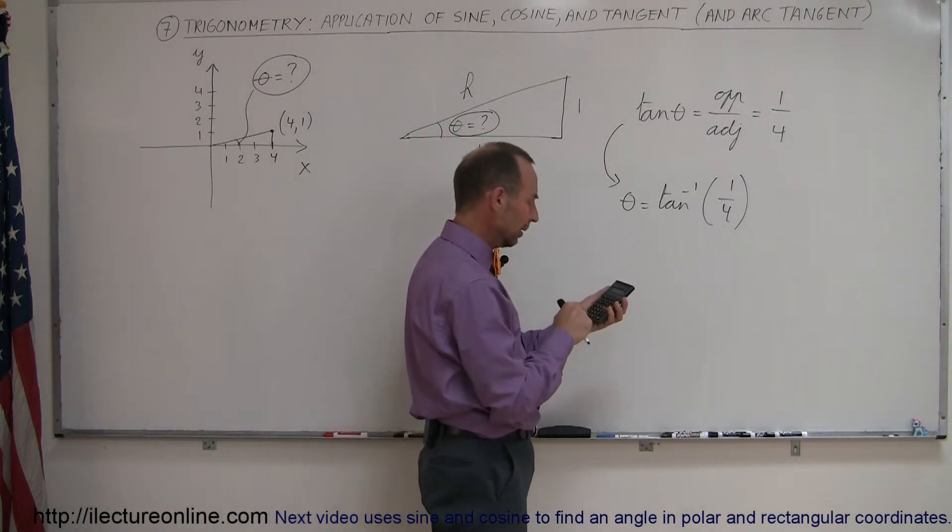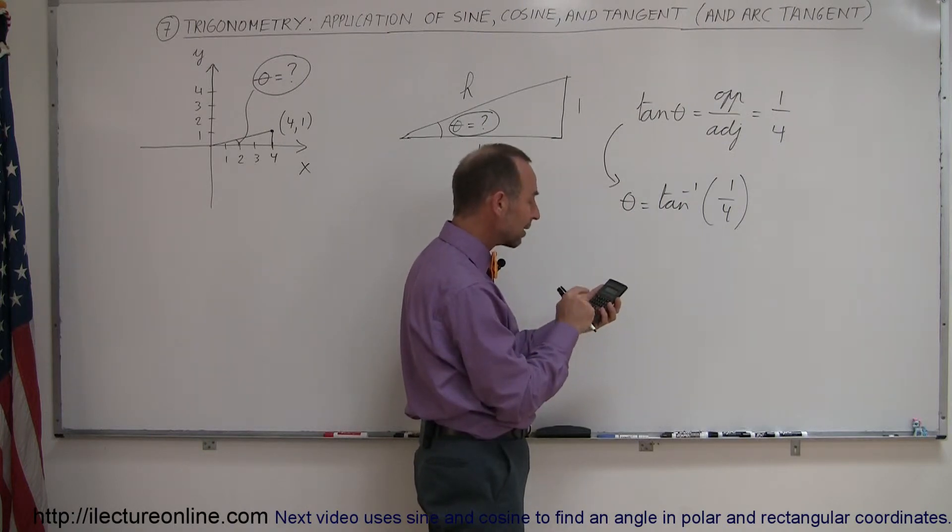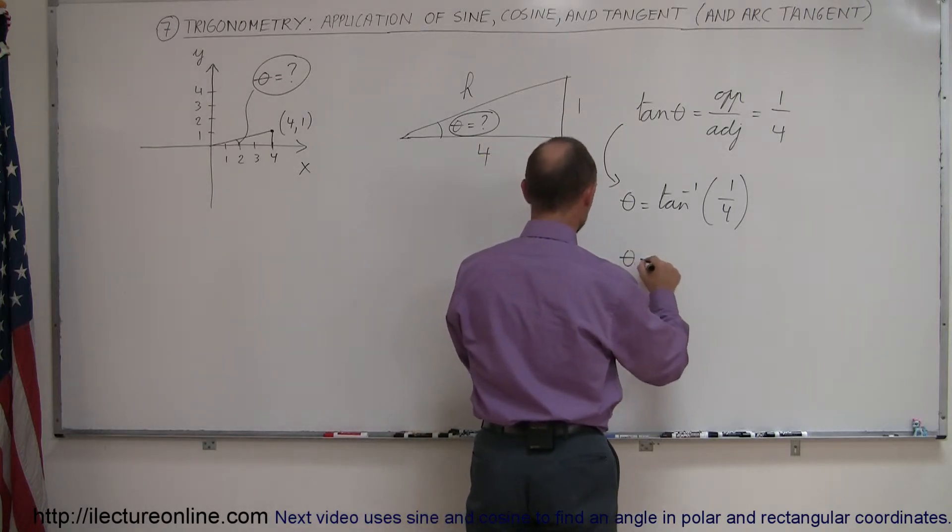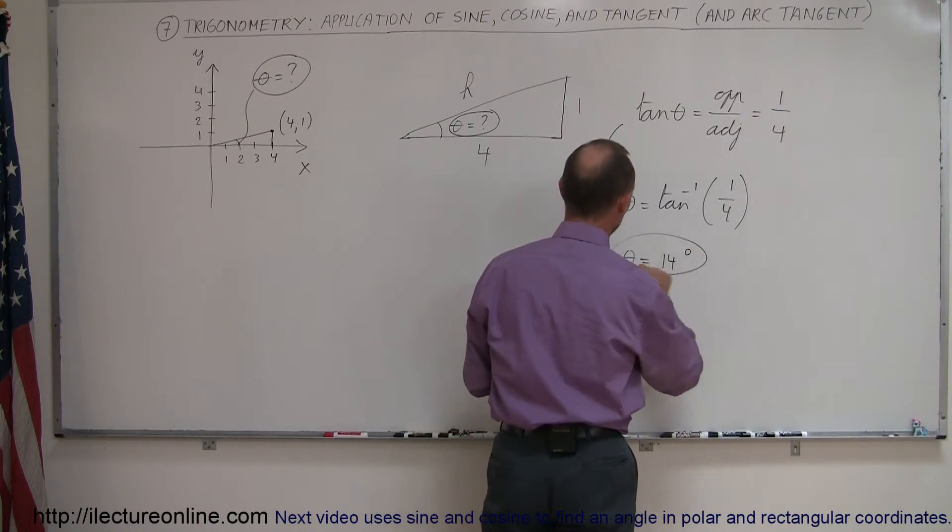So, take 1 divided by 4, which is 0.25, and then you take the arctangent. So you hit the second function button and the tangent. And so we have theta is equal to 14 degrees. So there's our angle.